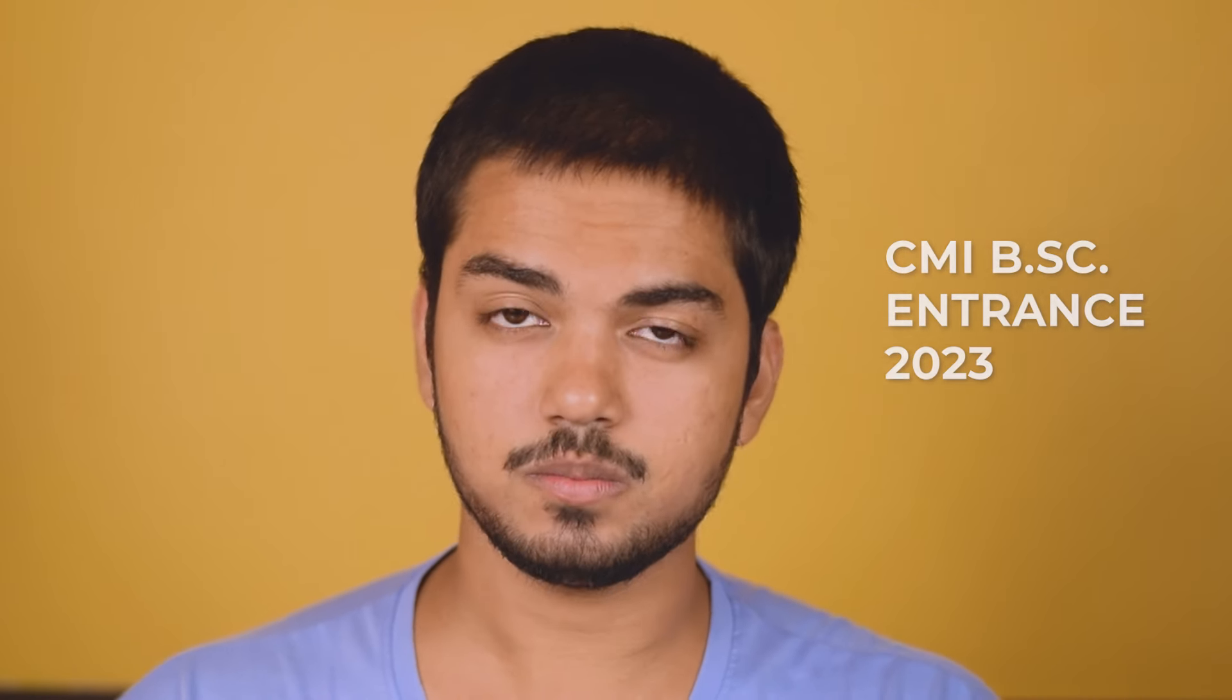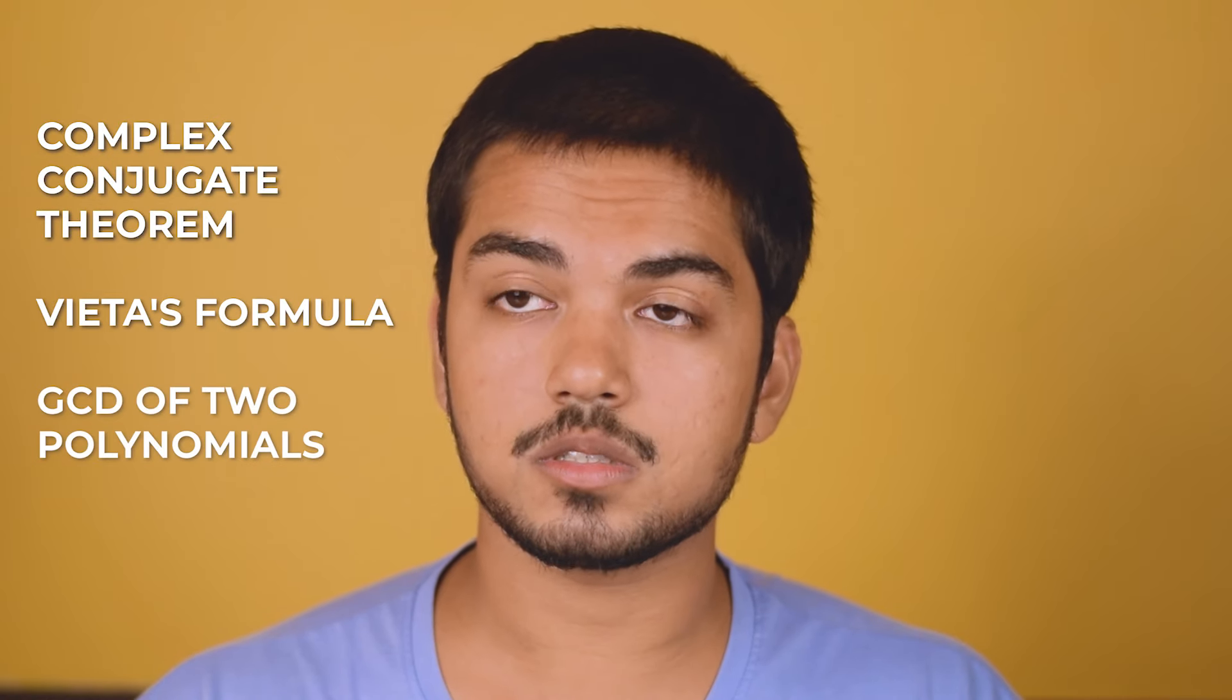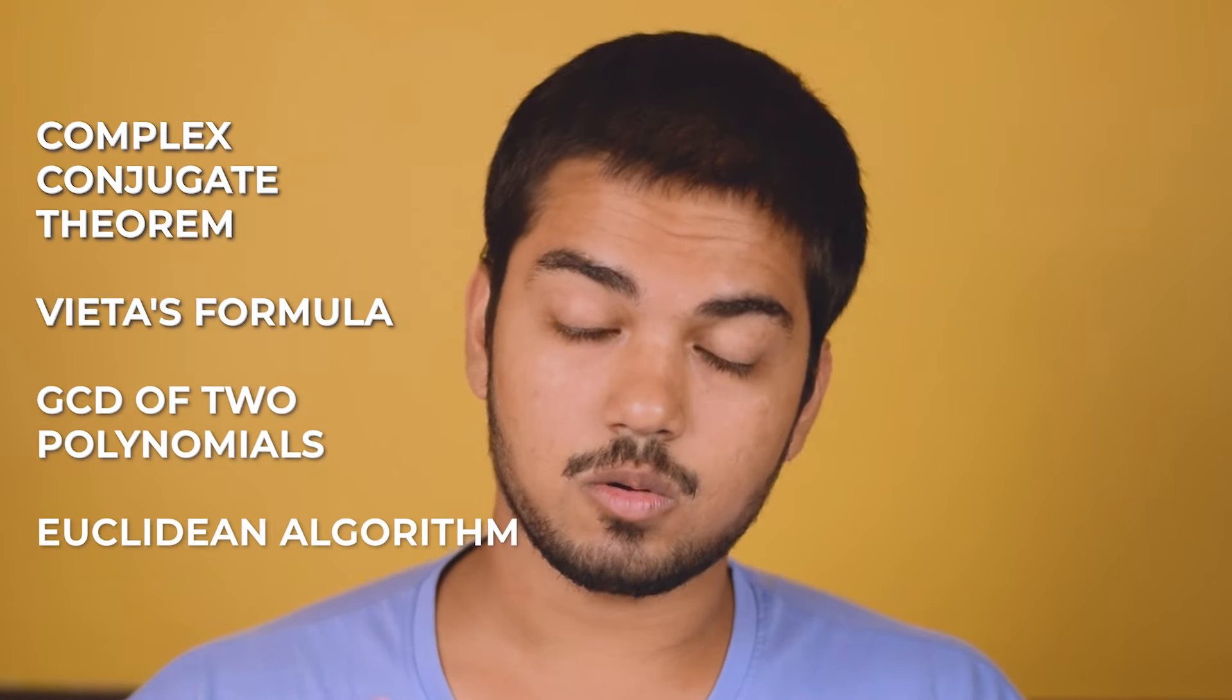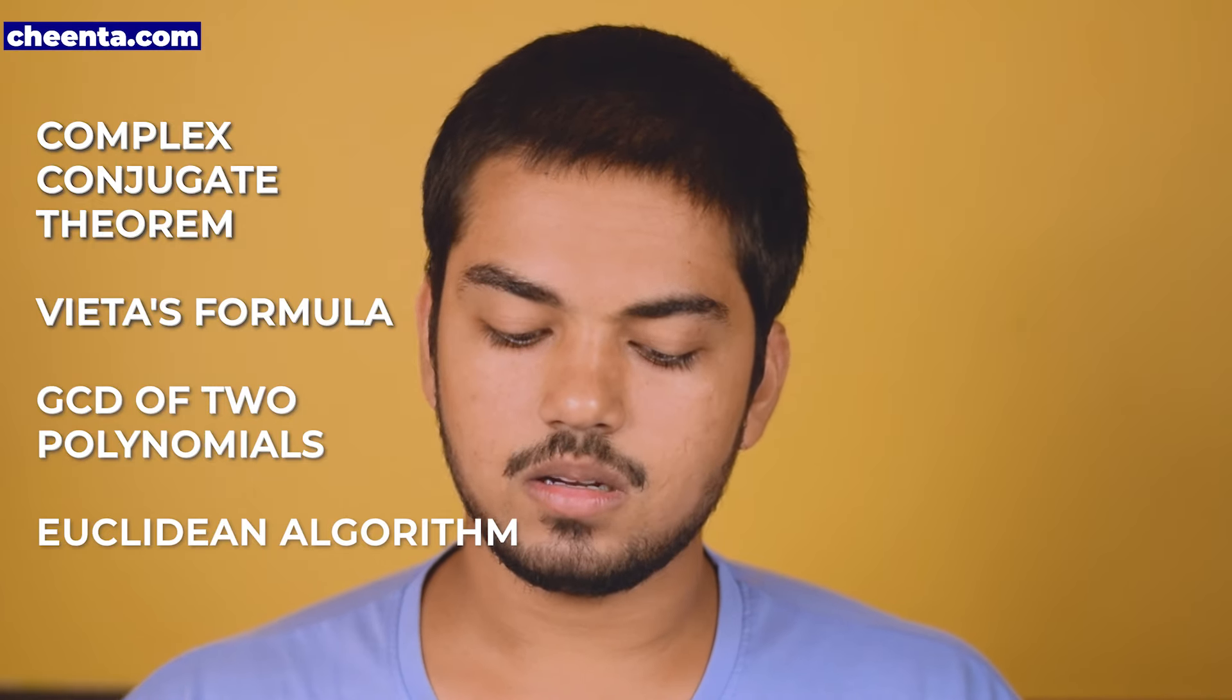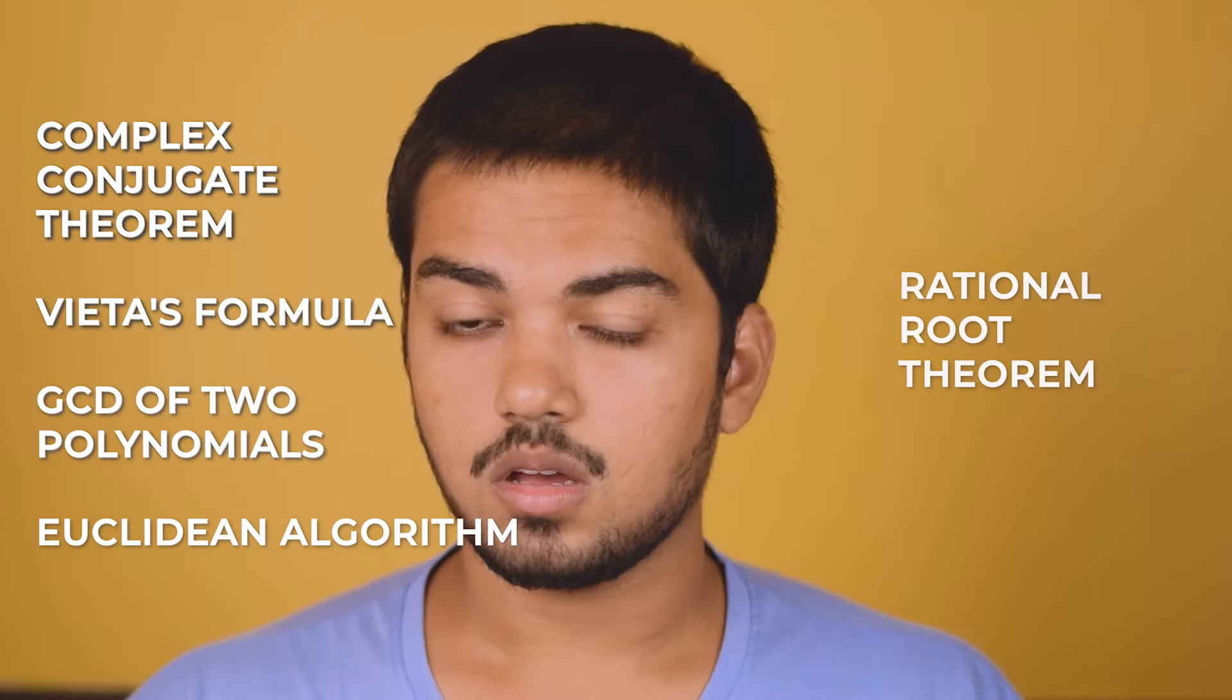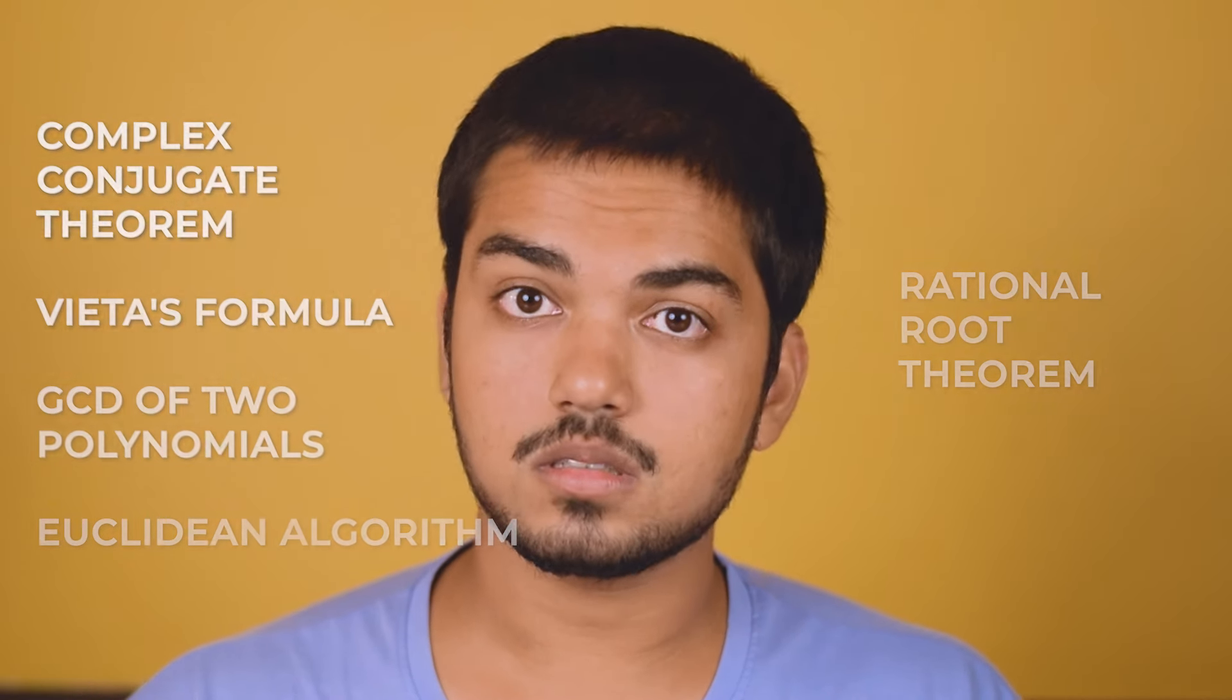Hi everyone, I'm Rajdeep, faculty here at Jinder. In today's video, we'll look at a problem from the CMI BASI entrance of 2023, the subjective problem. And instead of figuring out things about a particular concept, we'll actually be looking at many different concepts and results about polynomials. A lot of results, including complex conjugate theorem, Vietas formulas, GCD of two polynomials, and the resulting Euclidean algorithm that one can use to find said GCD, and even something like rational root theorem. All of these results will come together to help us solve this problem.